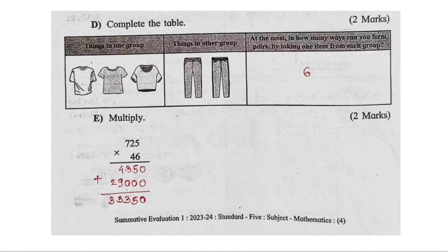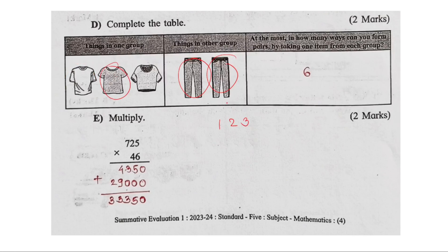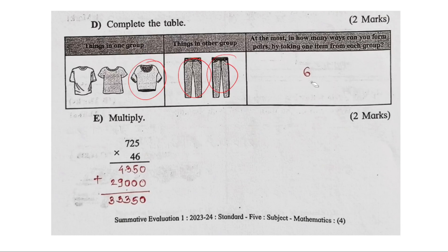Compute the table. In the first box, there are 3 shirts and 2 pants. In the second box there are 2 pants. The question is: at most, in how many ways can you form pairs by taking one item from each group? You get 1 shirt and 2 pants. Multiply — how do you do it? You multiply the number of shirts by the number of pants.